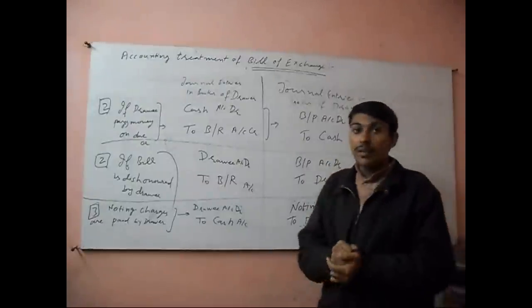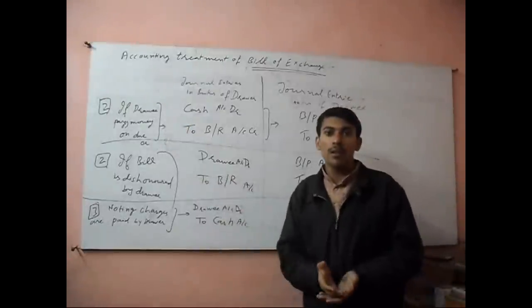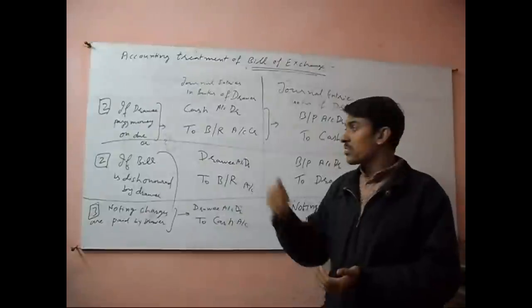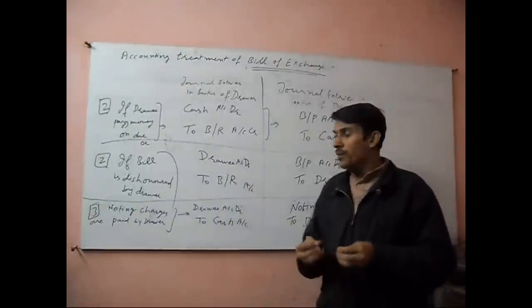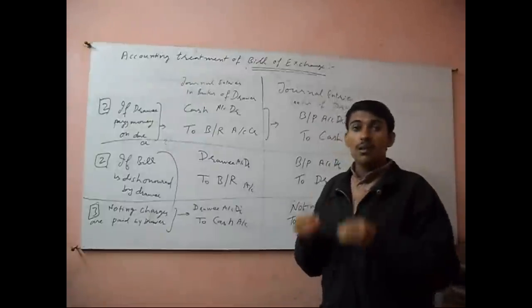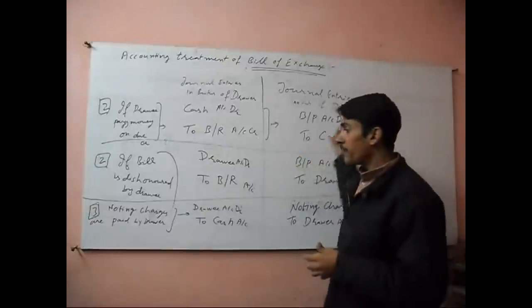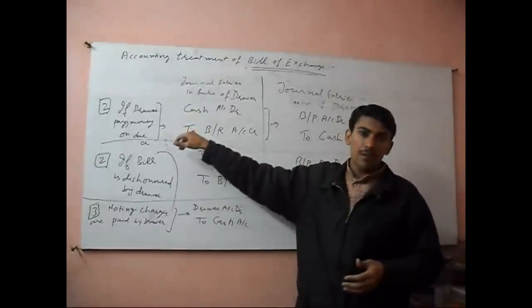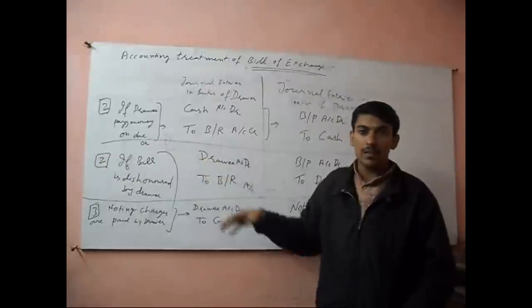If Drawee does not pay money on due date, what will be the journal entry? Means if bill of exchange is dishonored by Drawee or debtor, at that time we will not pass the first journal entry, rather we will pass the second journal entry.